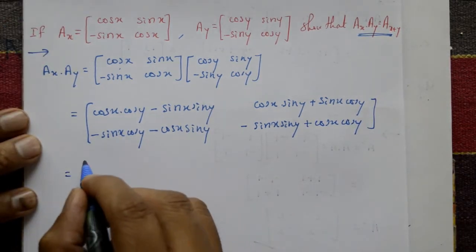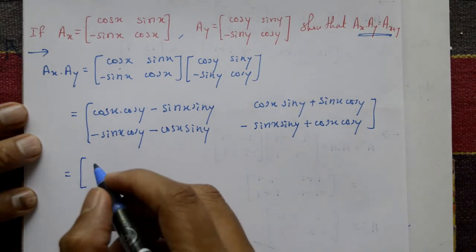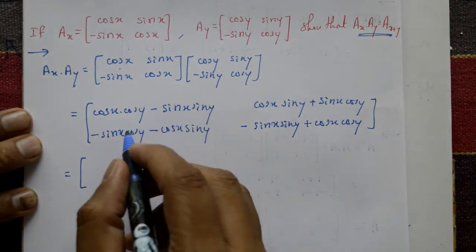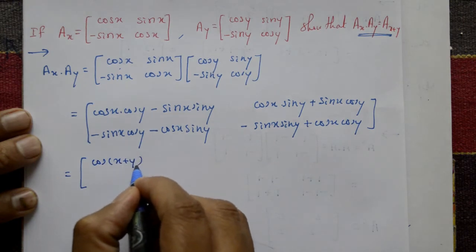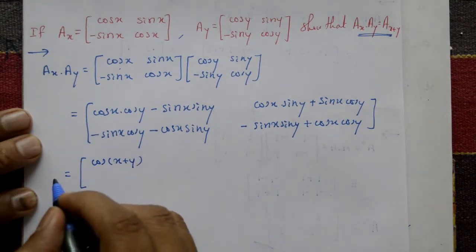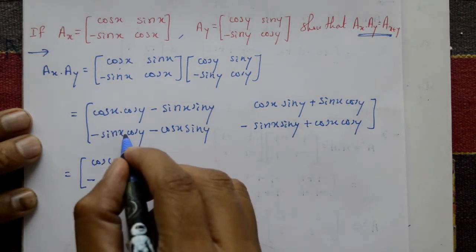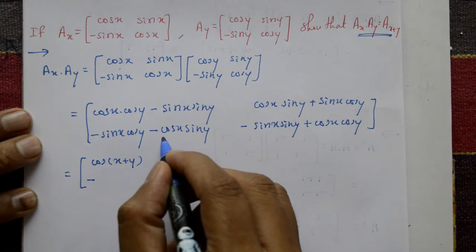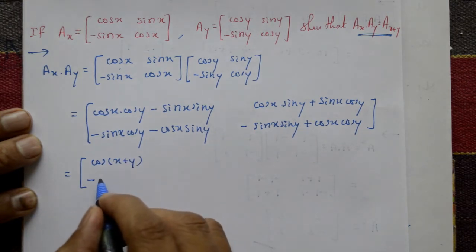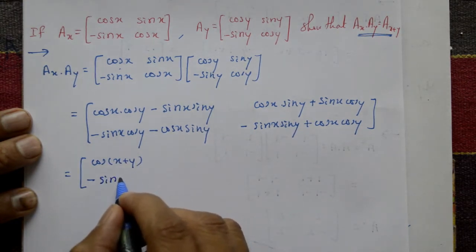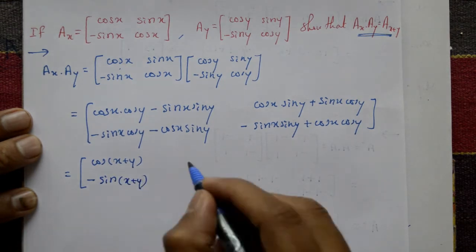Taking minus as common: we get minus times (sin x into cos y plus cos x into sin y), which equals minus sin(x plus y). And the other element becomes sin(x plus y).